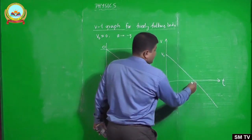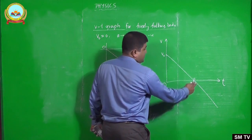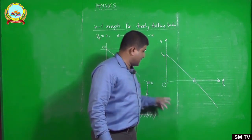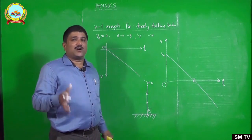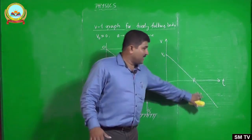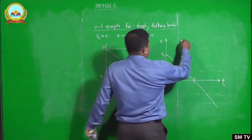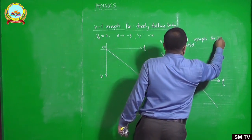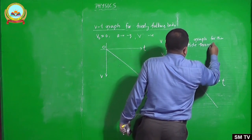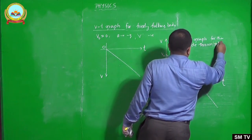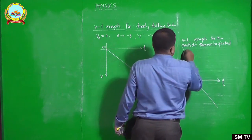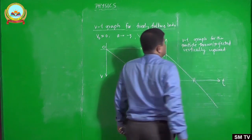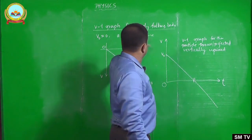The acceleration of the freely falling body is uniform and constant at a given place, so the VT graph is a straight line throughout. For an object thrown vertically upward, the graph goes from positive V₀ down through zero and into negative values. For example, thrown with 30 m/s upward: velocity decreases to zero at maximum height, then becomes minus 5, minus 10, minus 15 m/s as it falls. This is the VT graph for a particle projected vertically upward.